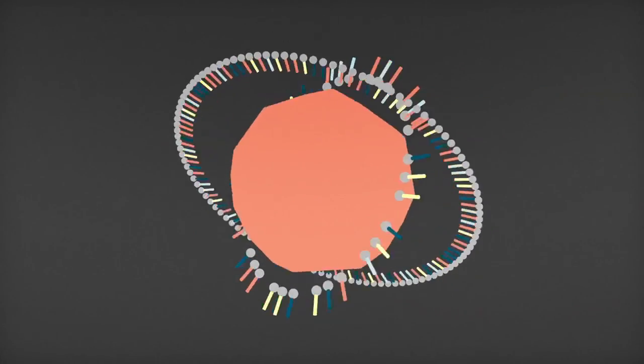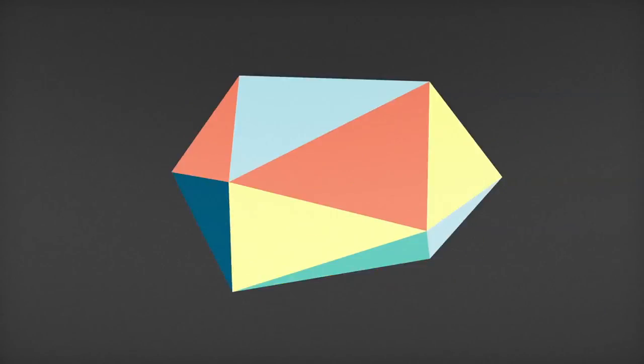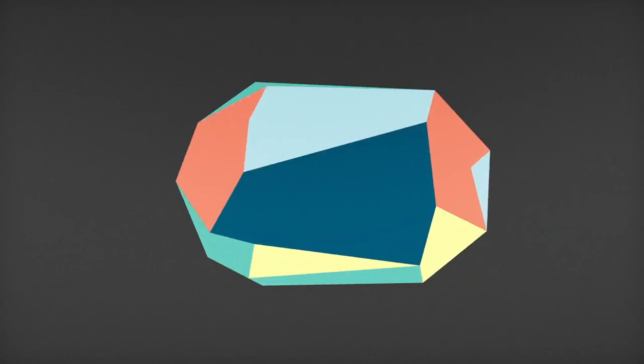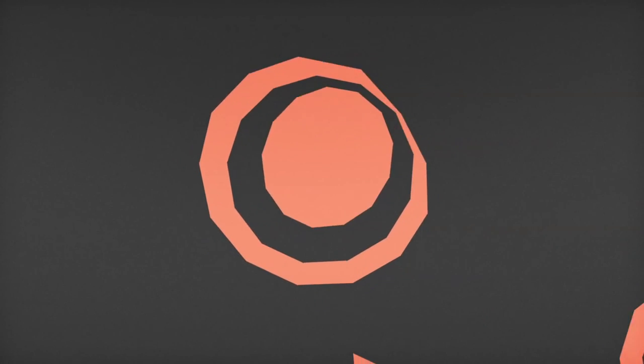Chromosomes contain many genes. A gene is a section of DNA that holds the instructions for a protein. Proteins are essential for life and perform a huge variety of jobs, from controlling the function of a single cell to determining the shape of a whole organism.